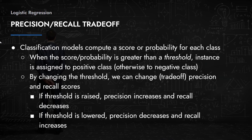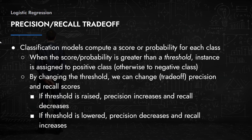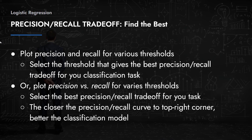If the threshold is raised, it becomes harder for an instance to be classified as positive, so precision increases but recall decreases. If the threshold is lowered, it becomes easier to classify instances as positive, leading to more false positives — precision decreases and recall increases. You can refer back to the confusion matrix to make sense of this relationship.